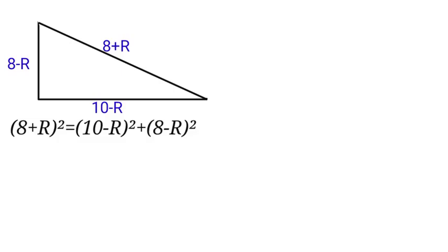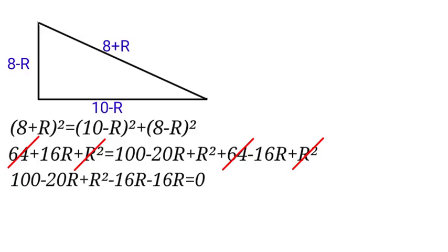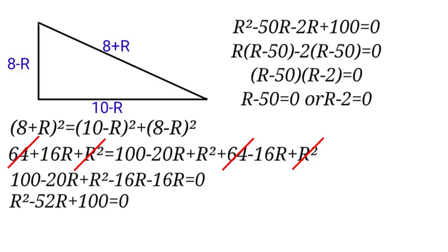When we expand the bracket, we have this. Now look at it: 64 cancels 64, R squared cancels R squared, and we are left with this. Now let us add them up. When we add 100 minus 20R plus R² minus 16R minus 16R equals 0, we get R² minus 52R plus 100 equals 0. Let us solve it further here. We factor out to get R(R-50) equals -2(R-50) equals 0.